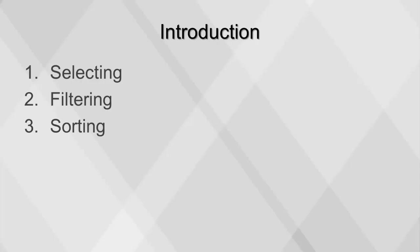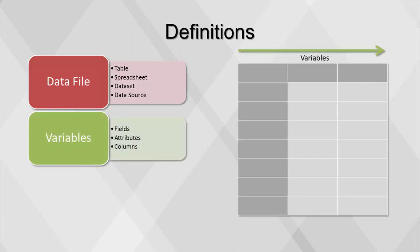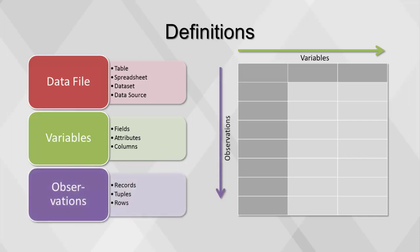This video will cover some of the foundations of business analytics: selecting, filtering, and sorting. There are many synonymous terms to describe the aspects of a typical data file, which can be referred to as a table, spreadsheet, dataset, or data source. Along the horizontal axis are the variables, which can also be called fields, attributes, or columns. Along the vertical axis are the observations, also referred to as records, tuples, or rows.